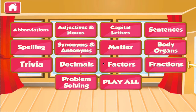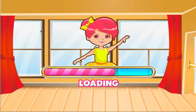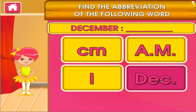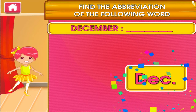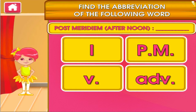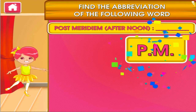Choose the activity you want to play. Abbreviation. Tap the correct answer. Good job! That's another right! Tap the correct answer. Great work!